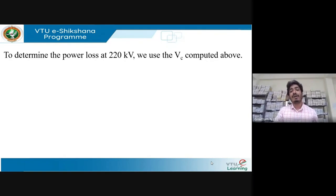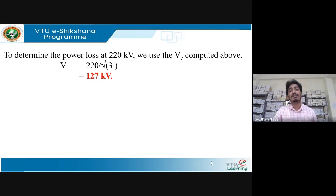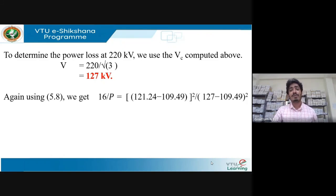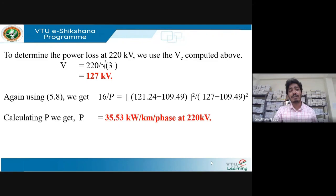To find the corona loss at 220 kV, convert to phase value: 220 ÷ √3 = 127 kV per phase. Substituting into the corona loss expression gives a corona power loss of 35.53 kW per kilometer per phase at 220 kV operating voltage.